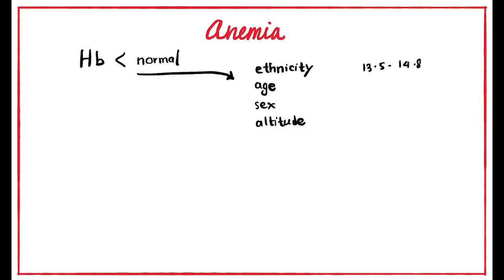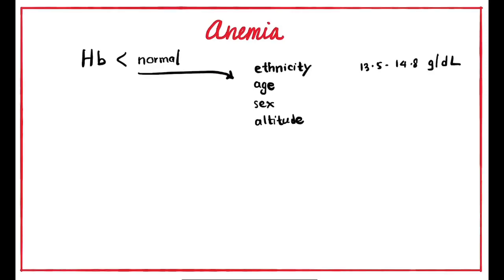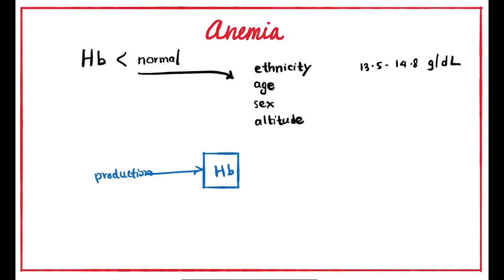The generalised hemoglobin level value is around 1.5 to 1.7. Hemoglobin production is slightly more than destruction. The balance between production and destruction of hemoglobin is important — hemoglobin will increase in production, and loss from the body may also increase.